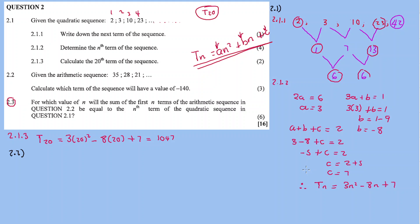For 2.2, we are given the arithmetic sequence 35, 28, 21. We need to calculate which term of the sequence has a value of −140. In other words, somewhere along the sequence there is a term equal to −140, and we need to find its position n.